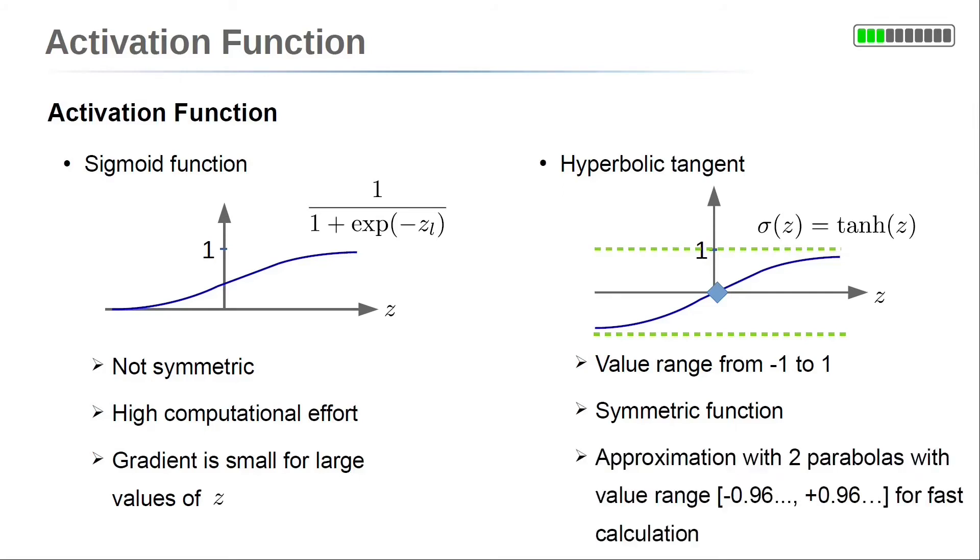But, there is an approximation with two parabolas with a value range between minus 0.96 and plus 0.96. This approximation can be used for faster calculations.